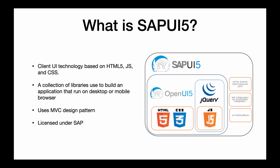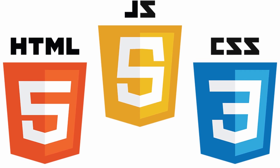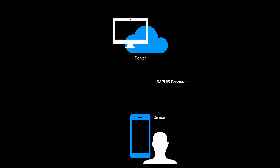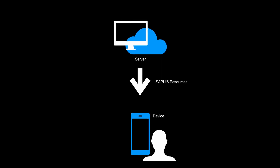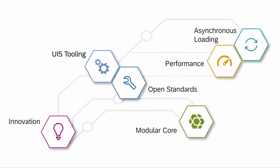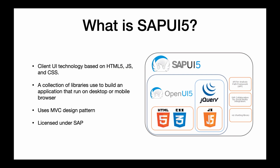SAPUI5 is actually a client-side technology. UI5 is mainly based on HTML5, JavaScript, and CSS, which means the action takes place in the user's device. Unlike other applications where the server usually handles the workload, UI5 is executed or downloaded on the device itself. While Fiori is the collection of apps, UI5 is a collection of libraries and tools — the tool we use to build applications to run on mobile devices or desktop. That's why Fiori apps are built using SAPUI5.